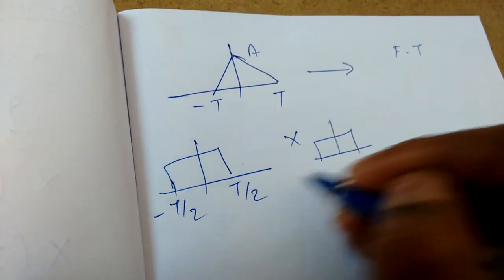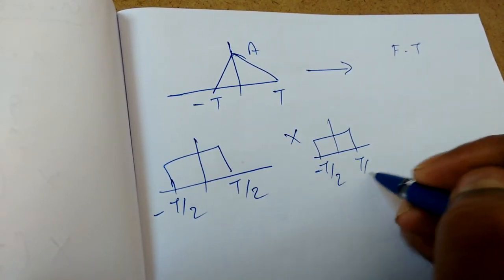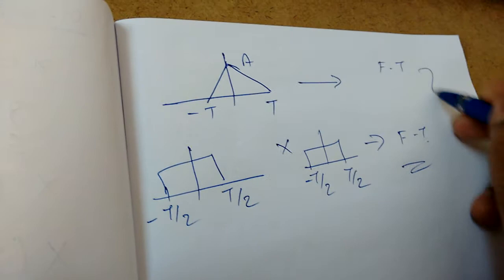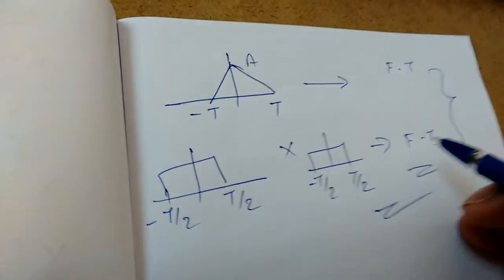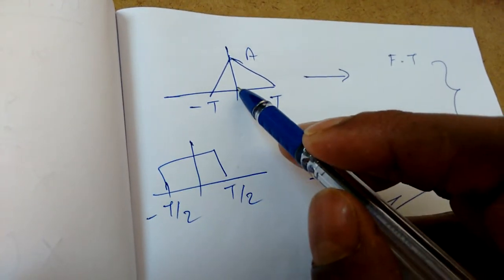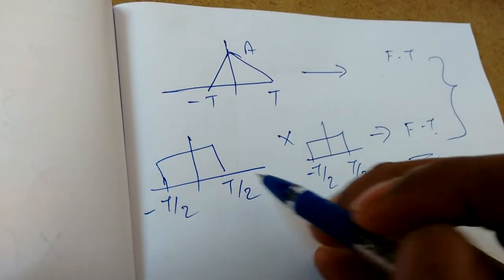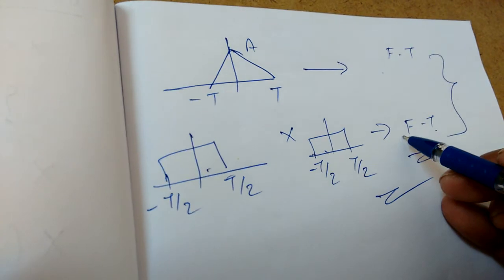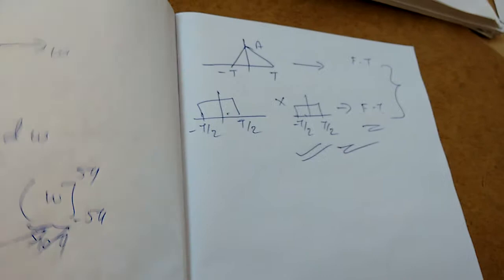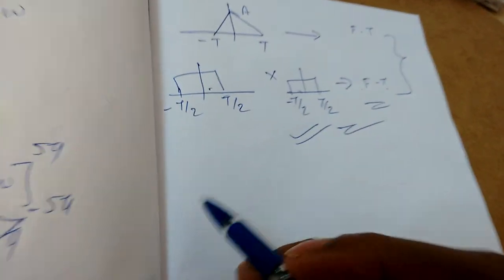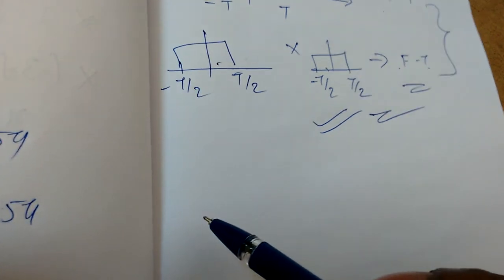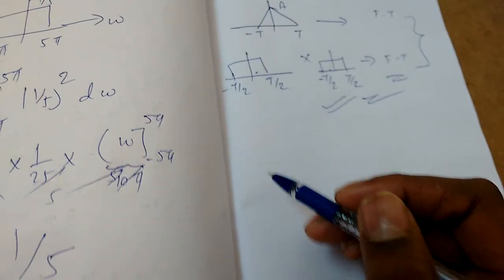Also, if you multiply two rectangular signals from −t/2 to t/2, what is the Fourier transform? You can try these. Remembering these values is very useful in the GATE exam — the Fourier transform of a triangular signal, and of the product of two rectangular signals. I hope I covered the maximum concepts in Fourier transform. If I missed something, please ask or comment below this video.